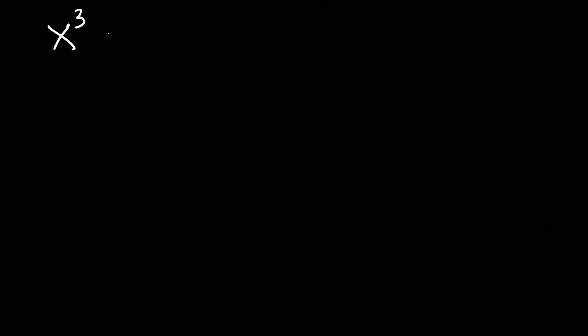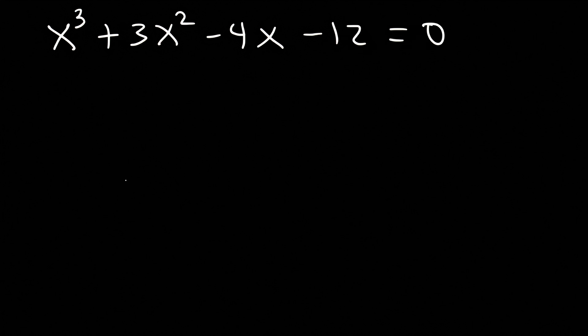In this tutorial I'm going to focus on solving polynomial equations. So let's start with this one: x cubed plus 3x squared minus 4x minus 12 is equal to zero. Go ahead and solve this particular equation.